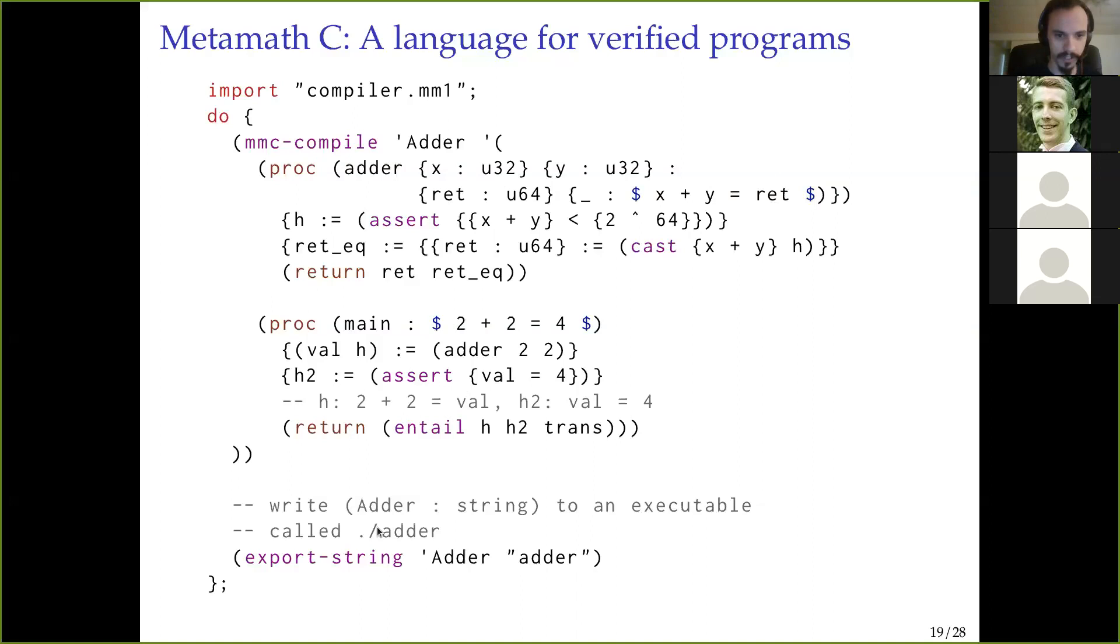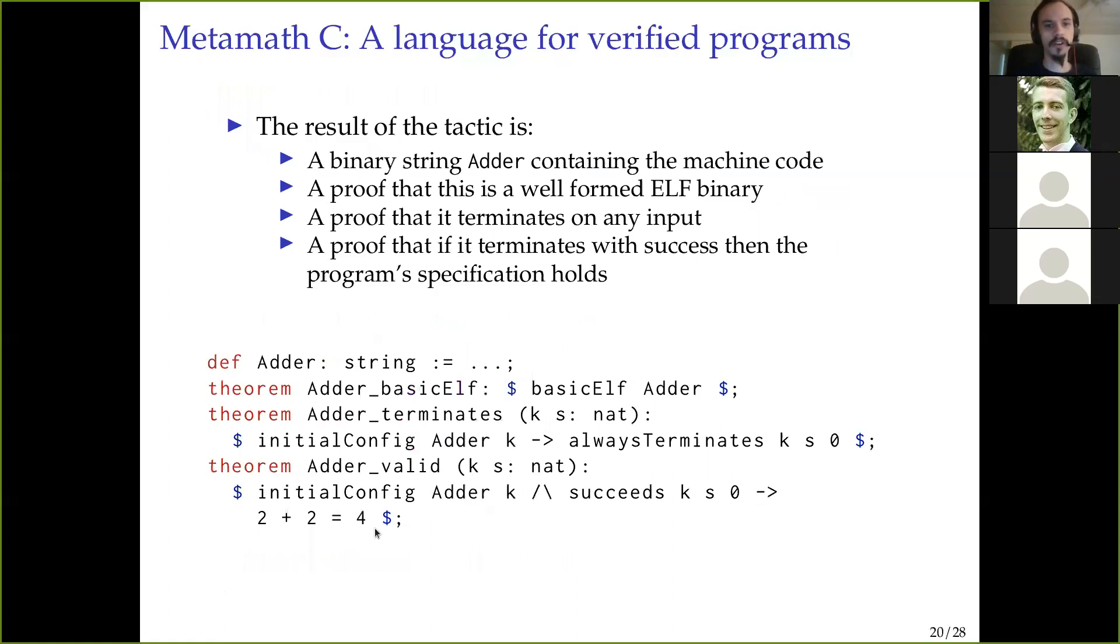So that's the code. We pass that to MMC compile, and it produces machine code. And it also produces some other things that I'll show in the next slide. In particular, it produces adder, which is a string literal, inside the MM1 data structures in memory. And so we call export string, and now it's going to actually write it to a file. And so now we have adder, maybe we'll have to mark this as executable, and then we can call this thing. And if we call it, and it returns, and it doesn't crash, then we know that 2 plus 2 equals 4, and we can pat ourselves on the back.